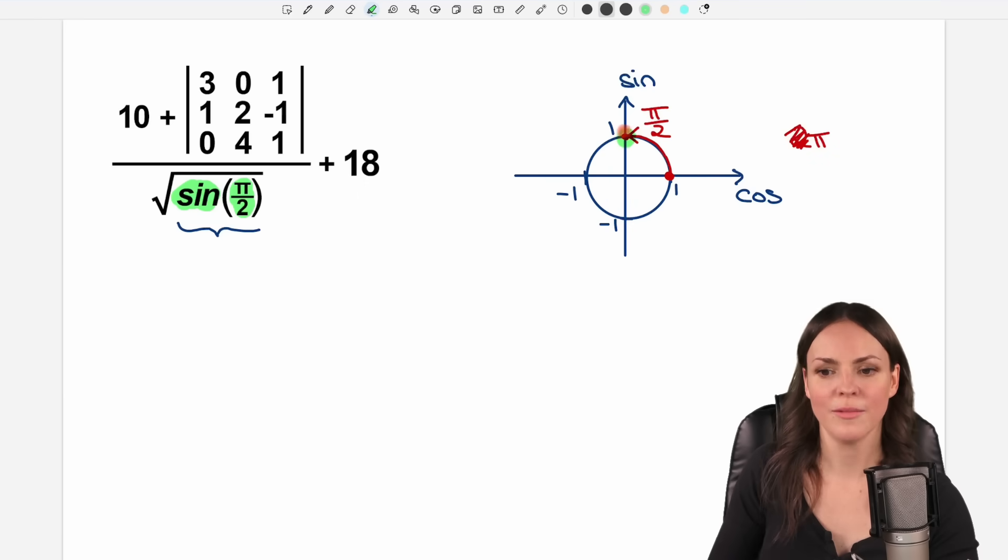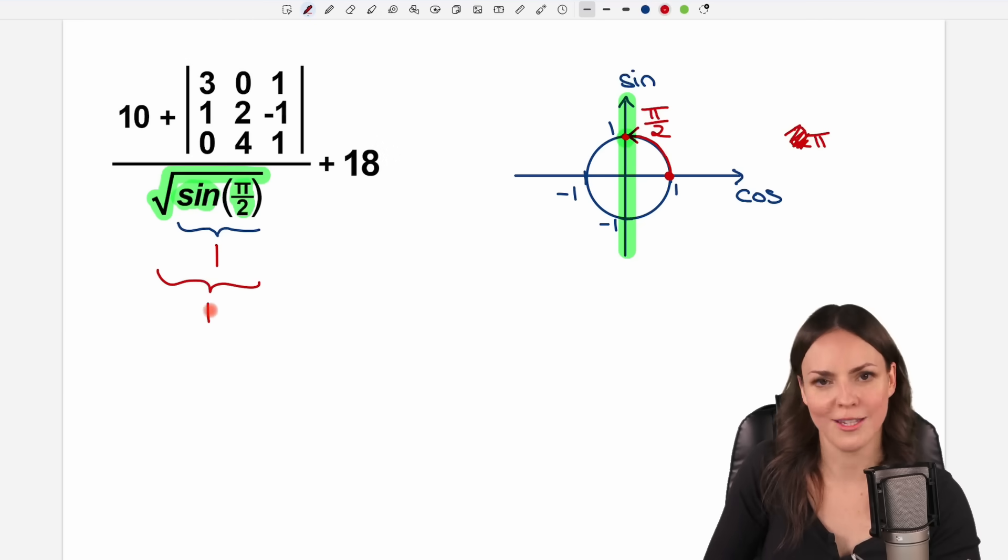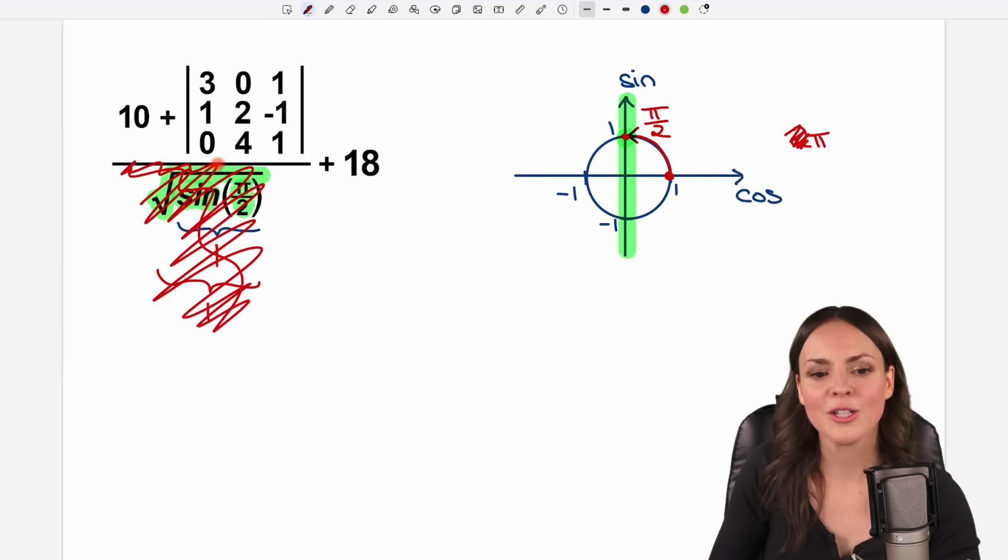And at this point here, I want to find the sine of pi over 2. So I take a look at the y-axis because I can find the values of sine here. And which y value do I have at this point? It is 1. So sine of pi over 2 is just equal to 1. Then I need the square root of 1, which in total is just 1 as well. So the denominator, this over 1, I don't need this at all. I can calculate these two numbers, then. I have 10 plus 18, which in total equals 28.